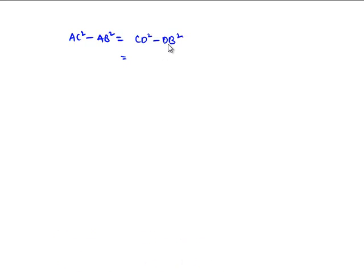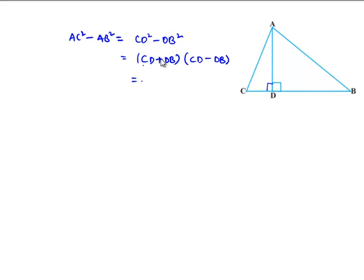This is in the form of A square minus B square, which can be written as A plus B into A minus B. That implies CD plus DB, which is nothing but BC, into CD minus DB.